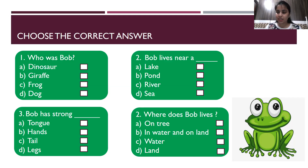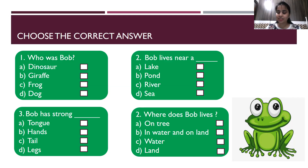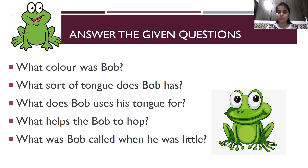Bob has strong — tongue, hands, tail or legs? D is the correct answer — he has strong legs which he uses to hop. Where does Bob live — on a tree, in water and on land, only in water, or only on land? D is the correct answer — he lives in water as well as on land. You see, it is so easy to answer these questions.